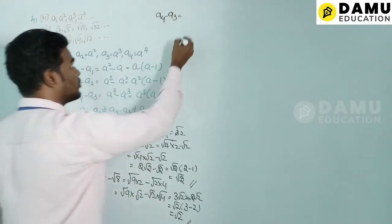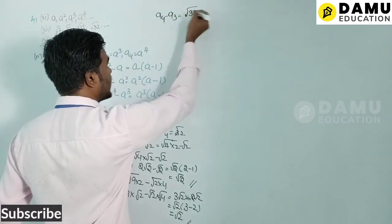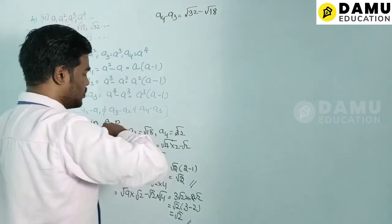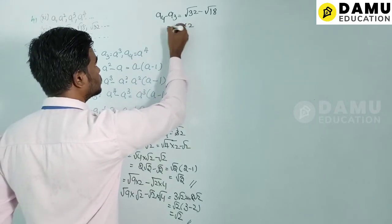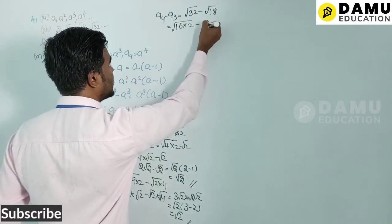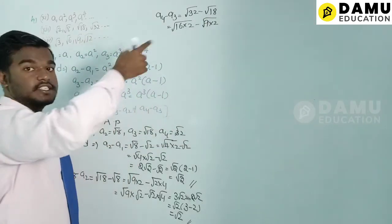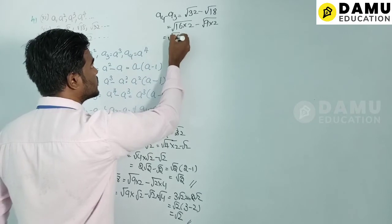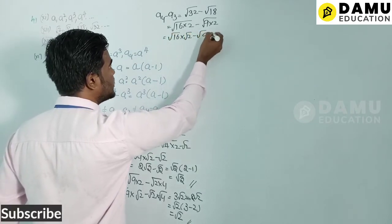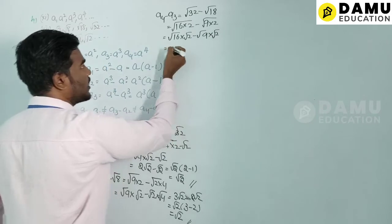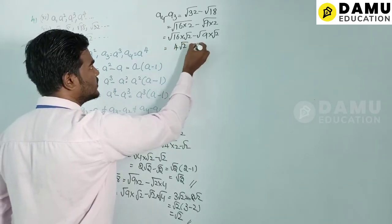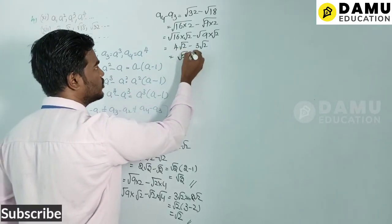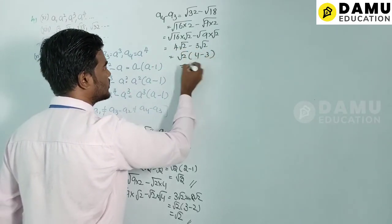Then a4 − a3 = √32 − √18. Writing √32 = √(16×2) = 4√2 and √18 = 3√2, we get 4√2 − 3√2 = √2. So all differences are equal to √2, confirming the series is in AP.